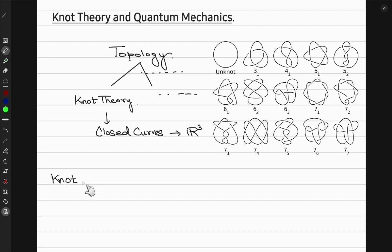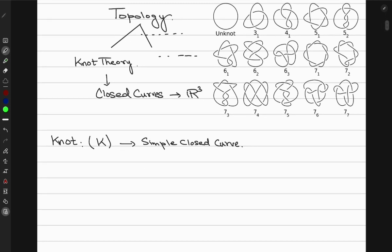Let's see what we mean by a mathematical knot. A knot k is simply a simple closed curve. In mathematics, a simple closed curve is one that is nearly injective and a continuous function. Mathematically, the knot k is an injective and continuous function such that k takes [0,1] and maps it to R3 — three-dimensional space — where the only non-injectivity is that k(0) equals k(1).